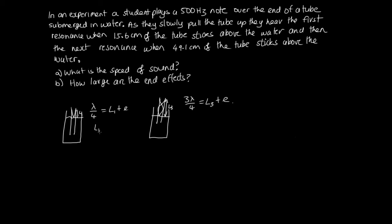And L1 is given in the question. That's the shortest length here, the 15.6 centimeters. And L3 is also given in the question as 49.1 centimeters. Okay, so to answer this first one, what's the speed of sound? We know the frequency, so we can use V equals F lambda to find the speed if we know the wavelength. Okay, so what we can do is we can actually solve this equation and this equation simultaneously. So let's call this equation 1 and this equation 2.